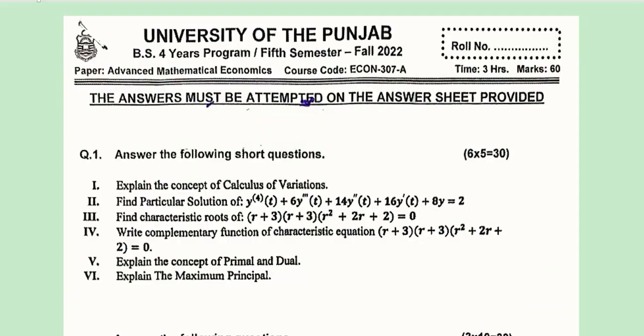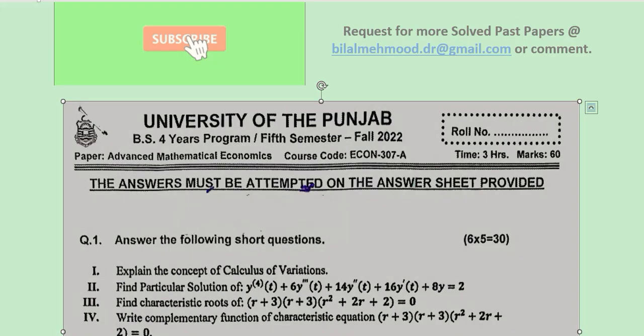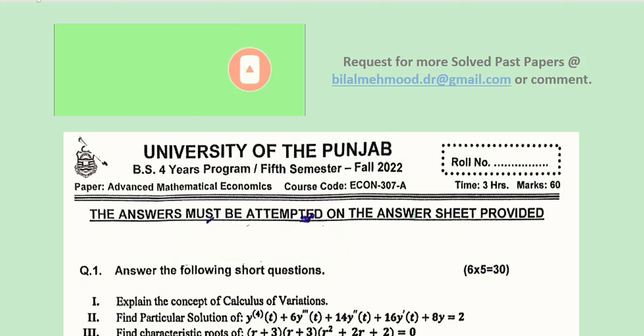So this is how the suggested solution of Econ 307, Advanced Mathematical Economics, B.S. four-year program, fifth semester, Fall 2022 of the affiliated colleges with the University of Punjab, is explained here. I hope this has benefited you, and this should encourage you to subscribe to this channel, like it, click the bell icon, and also to request further solutions of various economics and especially mathematical economics question papers.